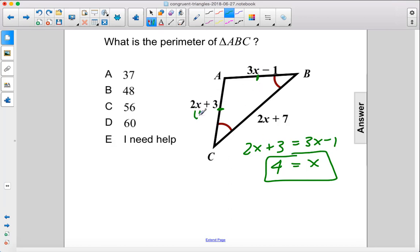That would make this 2 times 4 plus 3, which is 8 plus 3, which is 11. Over here, we have 4 times 3, which is 12, minus 1, which is also 11.